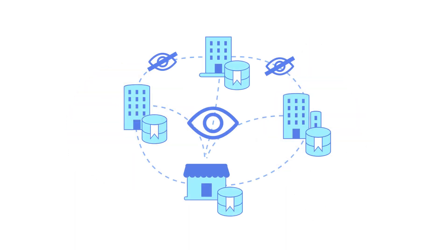This has often been cited as a barrier for governments and regulated industries to adopt these first-generation networks. For a multi-party application to really be viable for businesses like those in banking and finance, there needs to be granular privacy controls — meaning only those that should have access to the data can access or even receive the data. Something unique to DAML and Canton is the way privacy is built into the technology, treating it as a primary consideration for all features and providing data sovereignty.